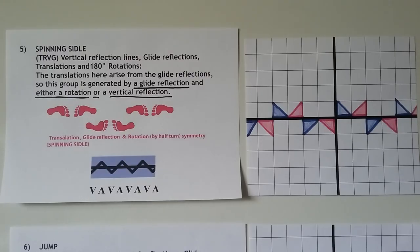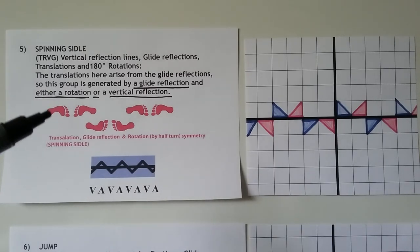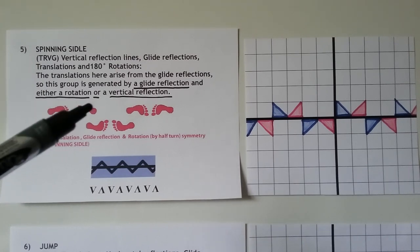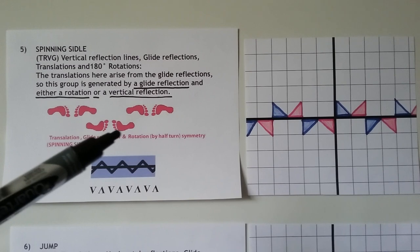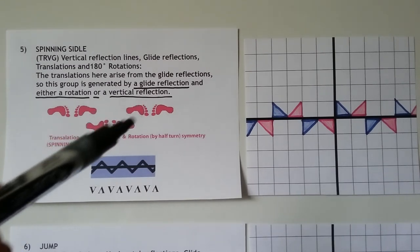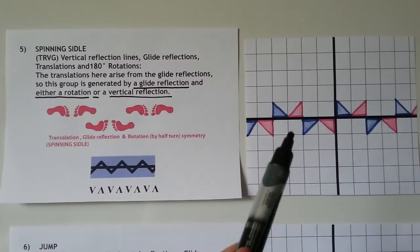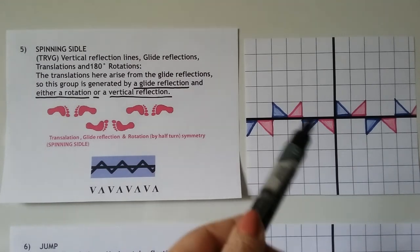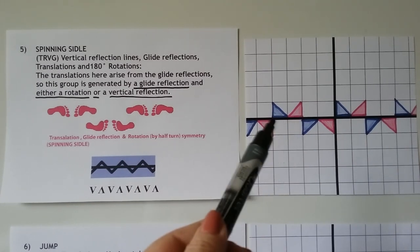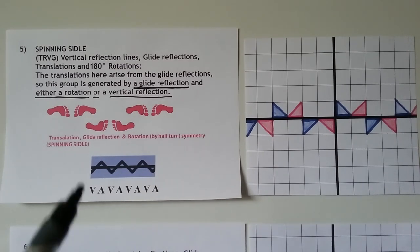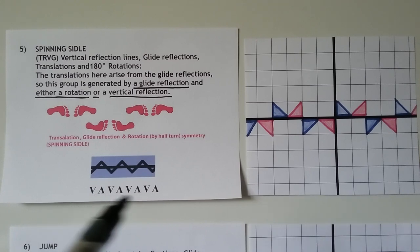Our fifth category is a spinning sidle. Sidle means to move sideways. We have vertical reflection lines, glide reflections, translations, and 180-degree rotations. The translations arise from the glide reflections, and this group is generated by a glide reflection and either a rotation or a vertical reflection. You can see the arch reflects across, then rotates 180 degrees, then reflects across again. It would be a pattern like this, or with the letter V. They would all be blue, but some are made red so you can see them visually.